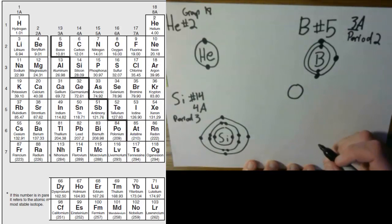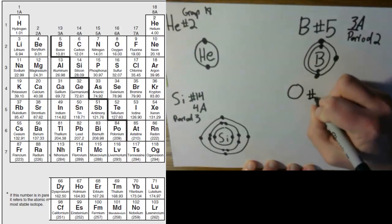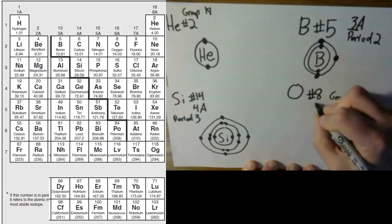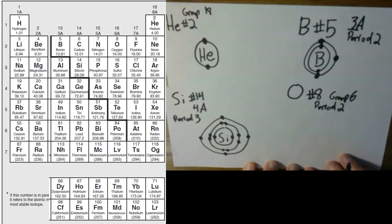Last example I want to do is oxygen. Oxygen is number eight, and it is in group 6A, so group six, and it is in period two. So first step, draw the symbol, O. And then it's period two. That means two rings. So ring one, ring two.